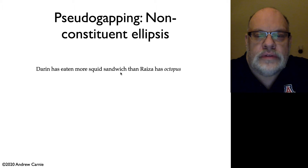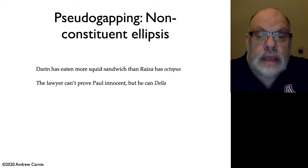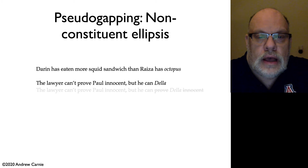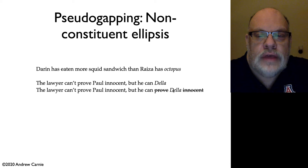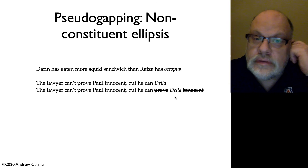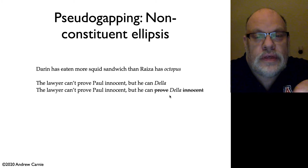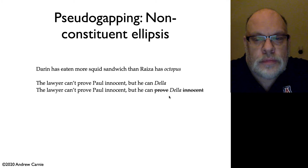So in our first clause, eating more squid sandwich; in our second clause, only octopus is the contrastive, comparative material. You can see this even more clearly in an example like 'the lawyer can't prove Paul innocent, but he can Della.' What's being deleted is 'prove' and 'innocent.' This is clearly not a constituent because Della is right in the middle of that. So it seems to be the case that this is some kind of non-constituent ellipsis. Regularly speaking, in most pseudogapping, the thing that survives the deletion operation is the direct object.